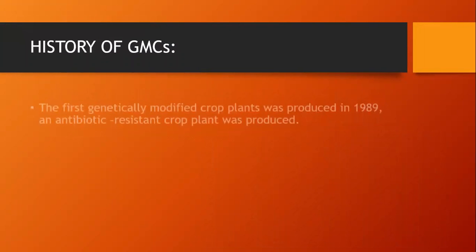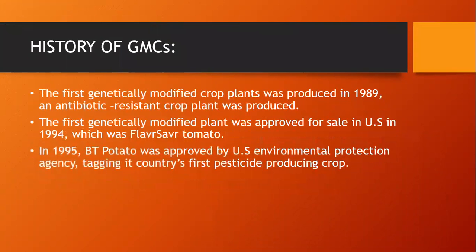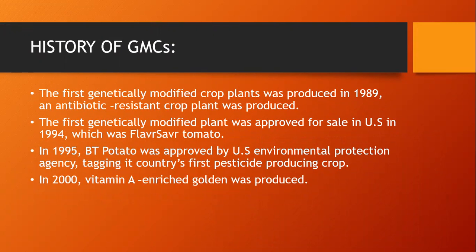Now here is the history of genetically modified crops. The first genetically modified crop plant was produced in 1989, which was an antibiotic resistant crop plant. The first genetically modified plant was approved for sale in the US in 1994, which was the Flavr Savr tomato. In 1995, BT potato was approved by the US Environmental Protection Agency, making it the country's first pesticide-producing crop. In 2000, vitamin A enriched golden rice was produced.